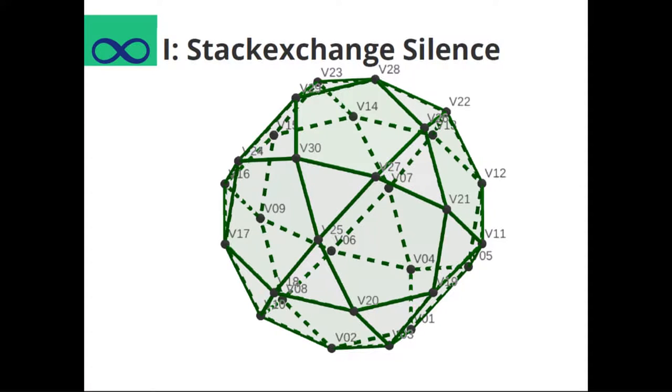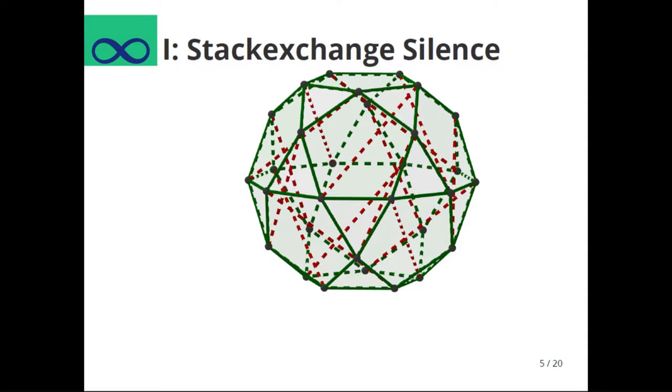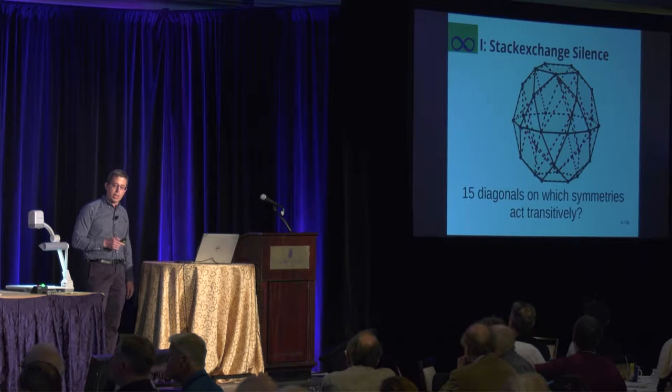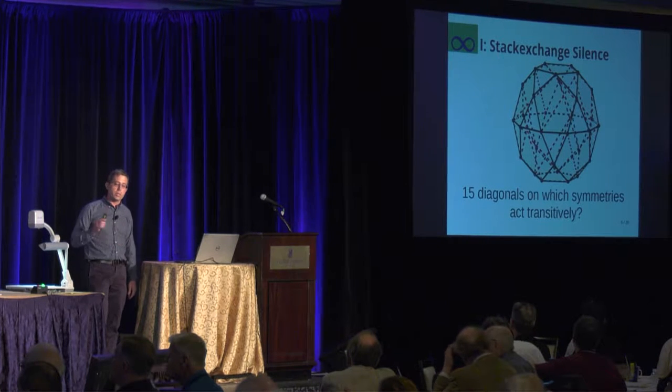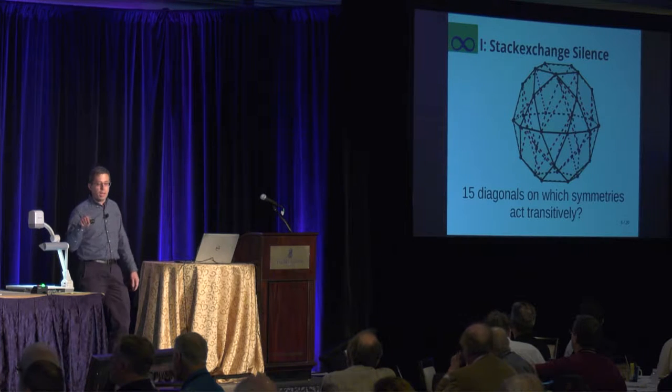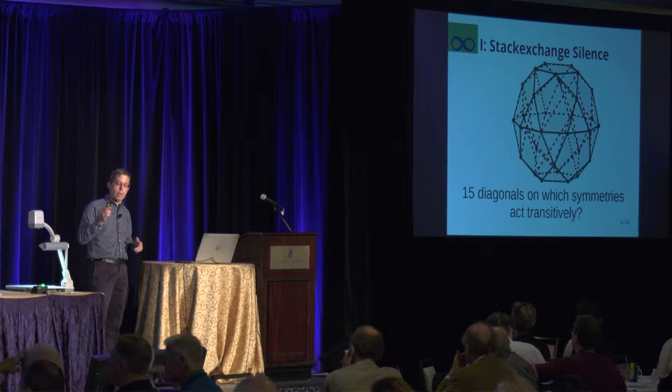An icosidodecahedron has 30 vertices. See I counted them, so I know it has 30 vertices. And then it's got a bunch of body diagonals, which are any segment with both endpoints are vertices of the icosidodecahedron, but it goes through the body, not along the surface. And the question is simply, are there 15 diagonals on which the symmetries act transitively? That's not an example. I strongly suspect the answer is no, but I don't have a disproof. Okay, end of talk one.